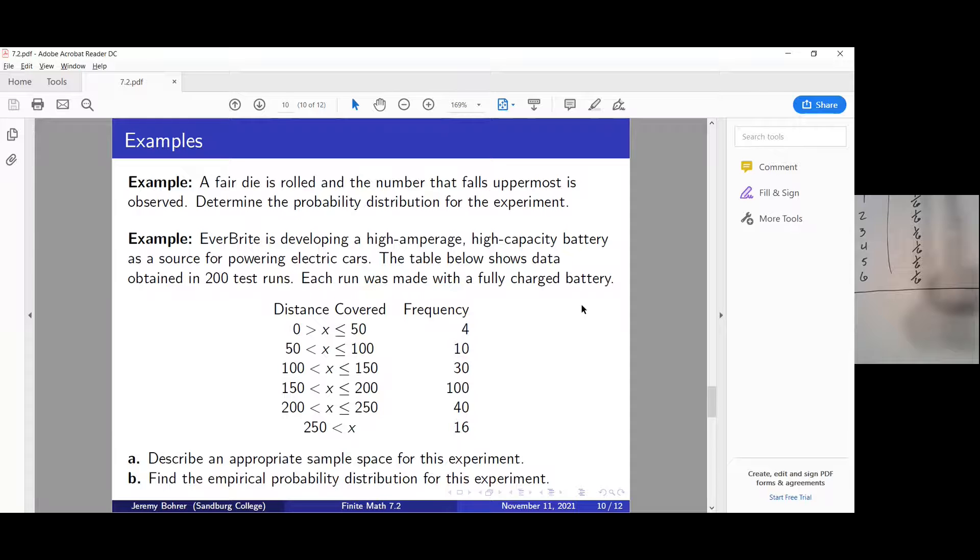Here we have the distance covered is greater than zero and less than or equal to 50. There were four times that happened. From 50 to 100, 10 times that happened. 100 to 150, 30 times. 150 to 200 happened 100 times. 200 to 250 happened 40 times, and greater than 250 happened 16 times.